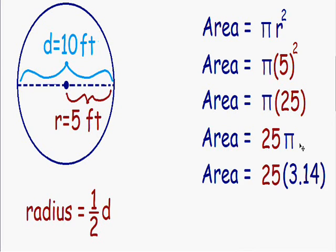So as you can see, instead of writing twenty-five times pi, I wrote twenty-five times three point one four. And if you plug twenty-five times three point one four into your calculator, you get a value of seventy-eight point five.